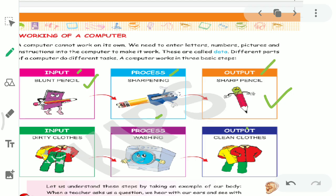Children, if we have to get some work done from the computer, we first have to give it input. What do we have to give? Input - some data has to be given. Like numbers, letters, pictures, instructions. We have to give it some data, which the computer's brain processes. And it gives us the result - the result we need for our work. And that result is called output.